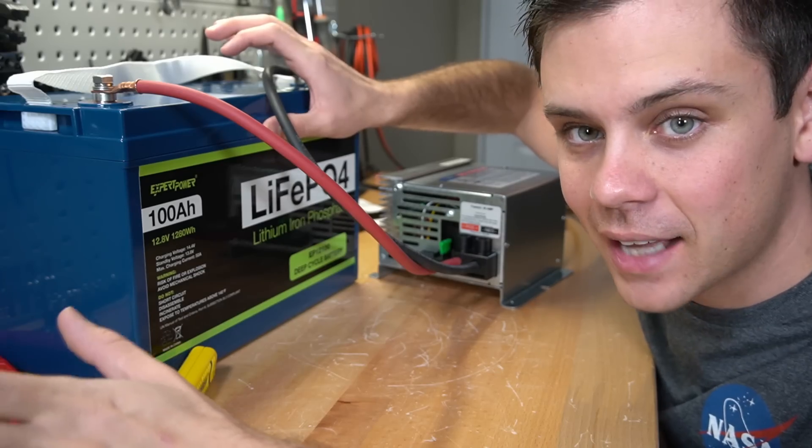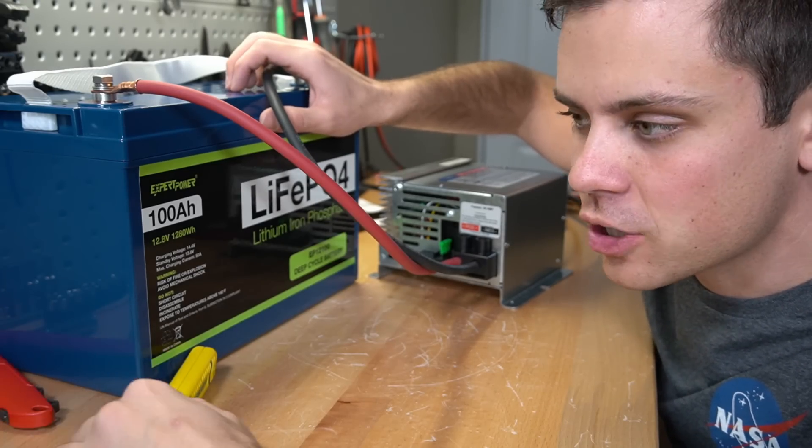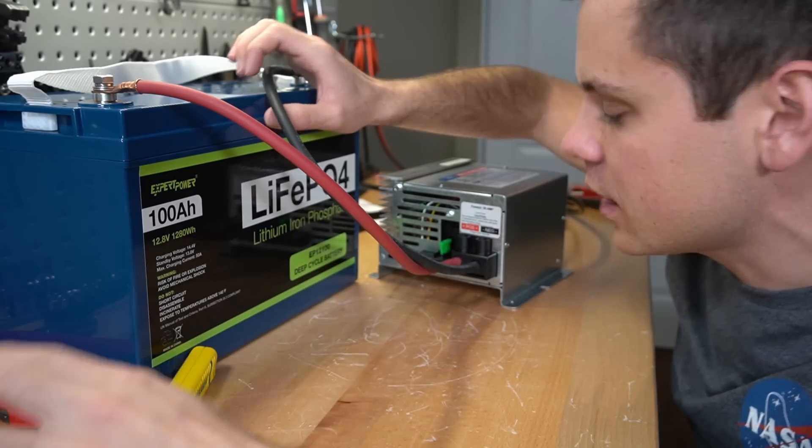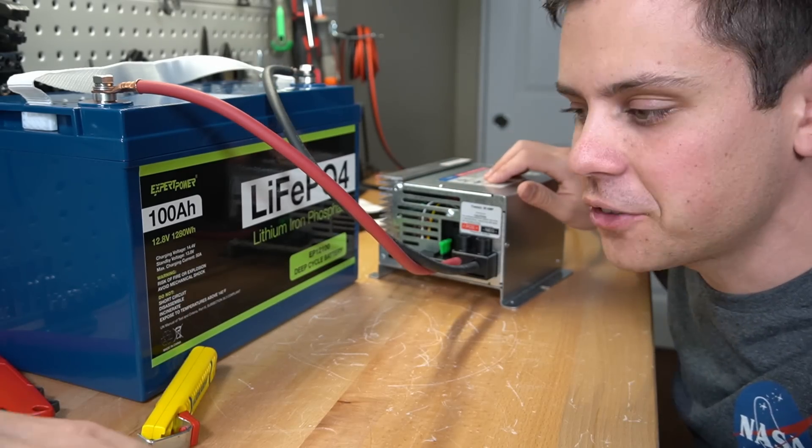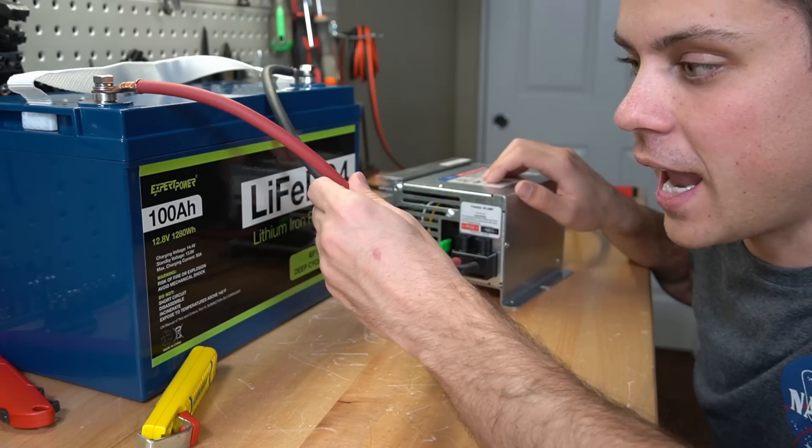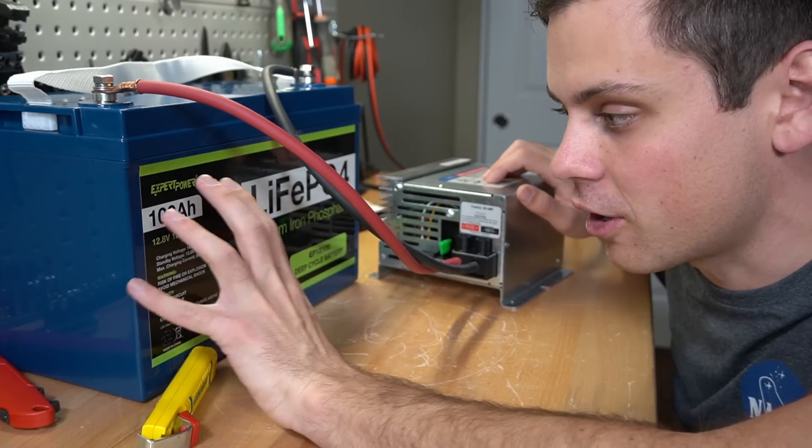If I were using my other lead acid speed charger, usually for the last hour it drops down to 12 amps and it drives me nuts. This one for lithium iron phosphate does constant current and voltage all the way till the end. It will push 30 amps until this battery is fully charged.